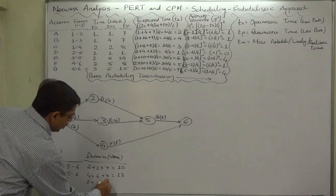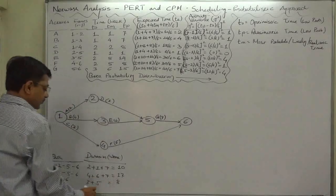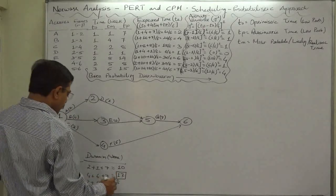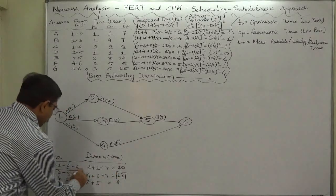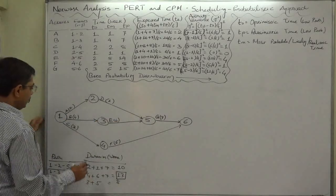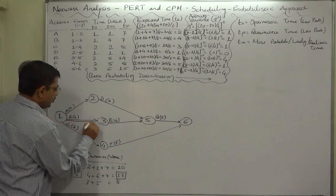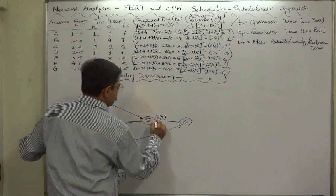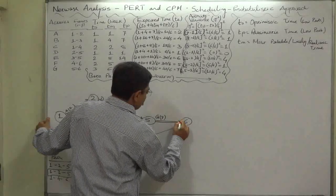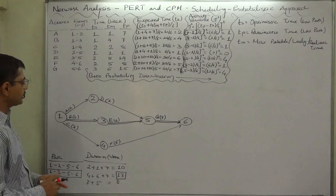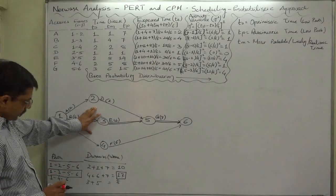The longest duration is 17 weeks, that means the critical path is 1-3-5-6. And activities b, e, and g are on the critical path, that means b, e, and g are the critical activities of this particular project.